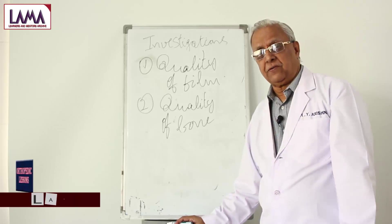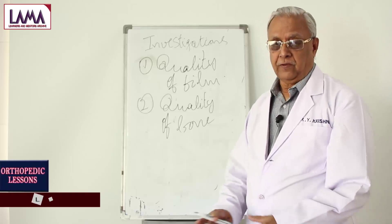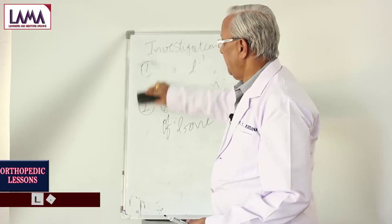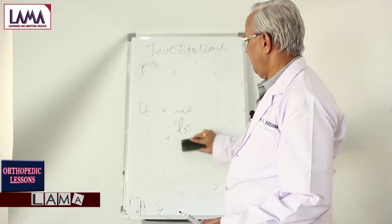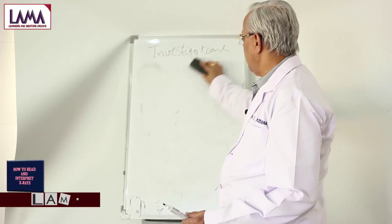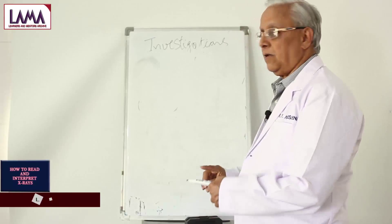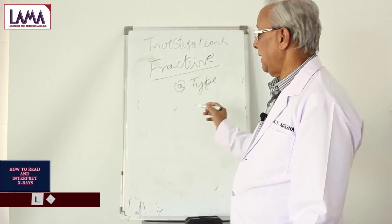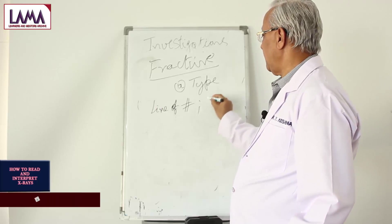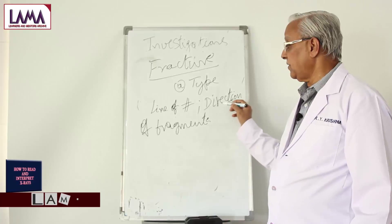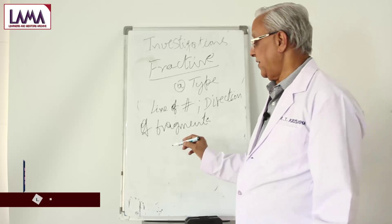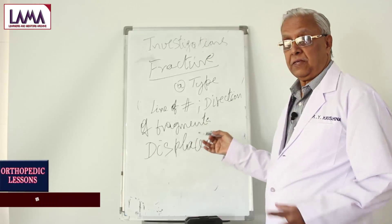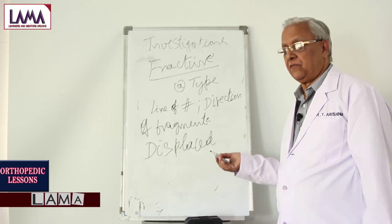Suppose for a trauma you have sent the patient — what is that you have got to see? In trauma you have got to see the following points. Whenever you send the patient for X-ray for trauma, you have got to note: number one, the fracture type. The type depends upon the line of fracture and direction of the fragments, and then whether the fragments are displaced or in position. Each is a subject by itself, and we will talk about this when we discuss fractures.